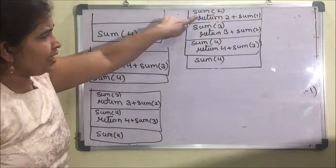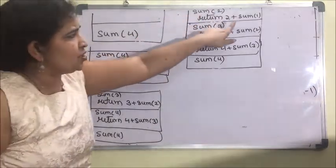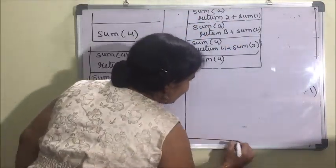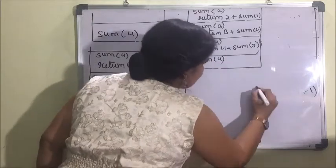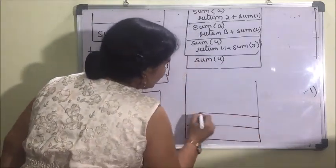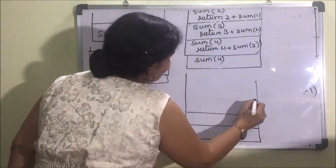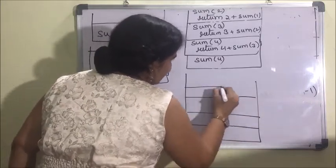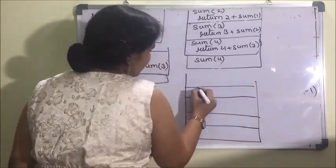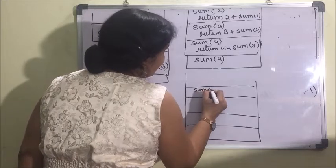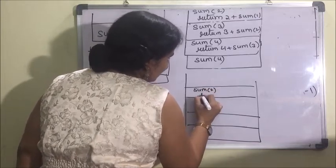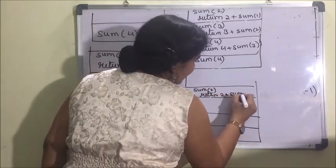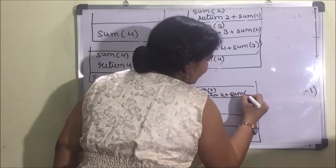All the frames will remain as they are — frames 1, 2, 3, and 4. The frames show: sum(2) returns 2 plus sum(1). Now it will make a function call to sum(1).